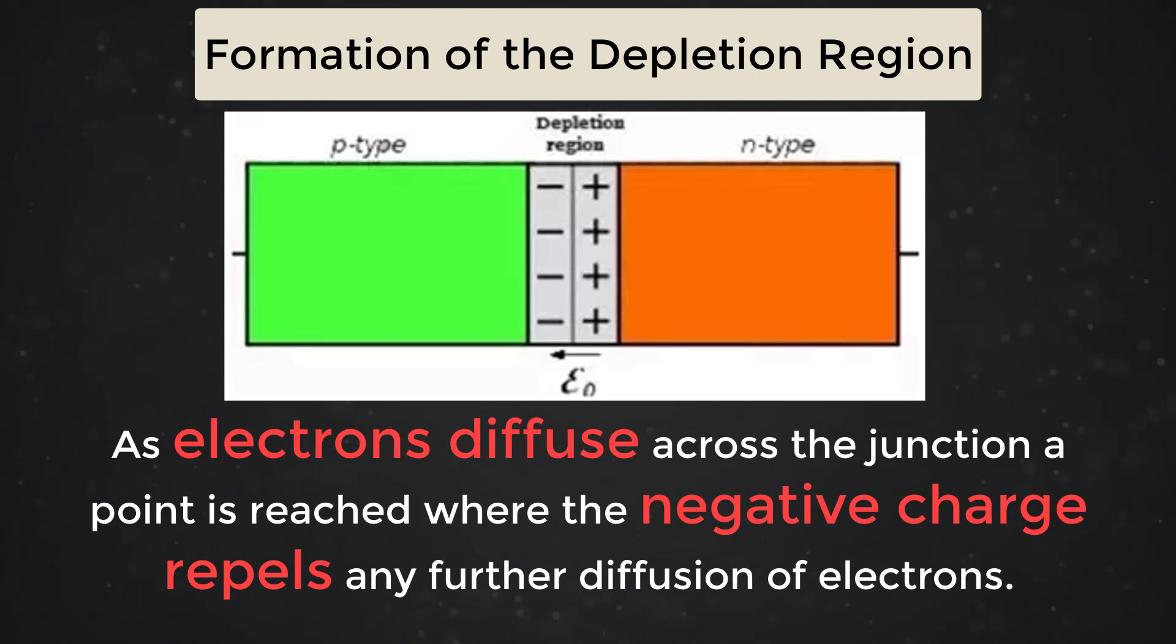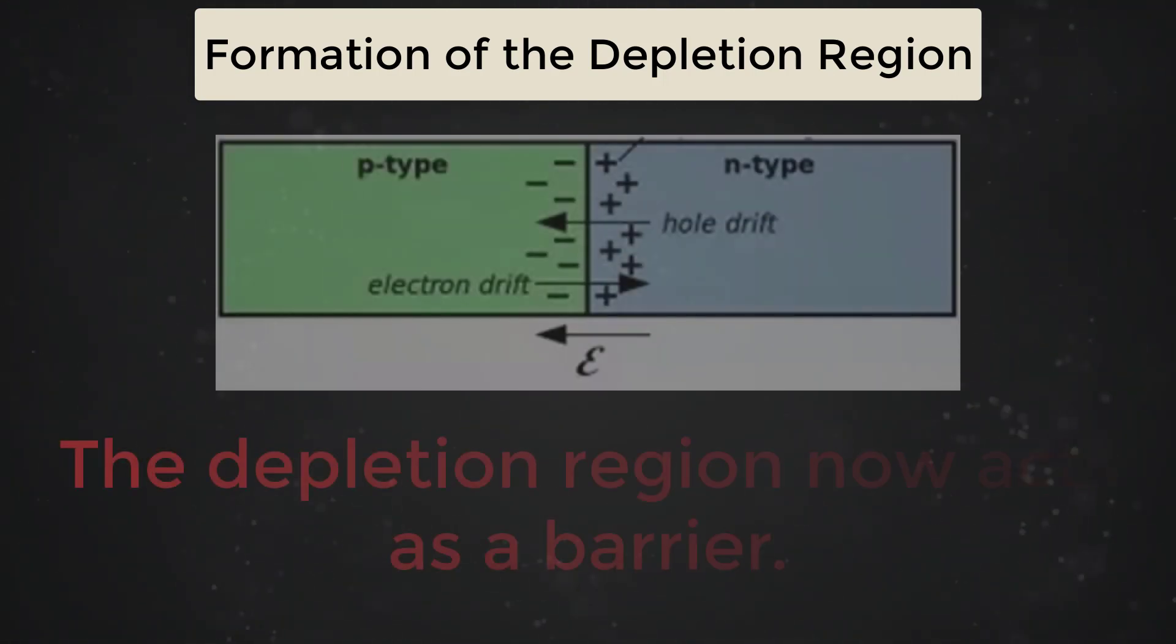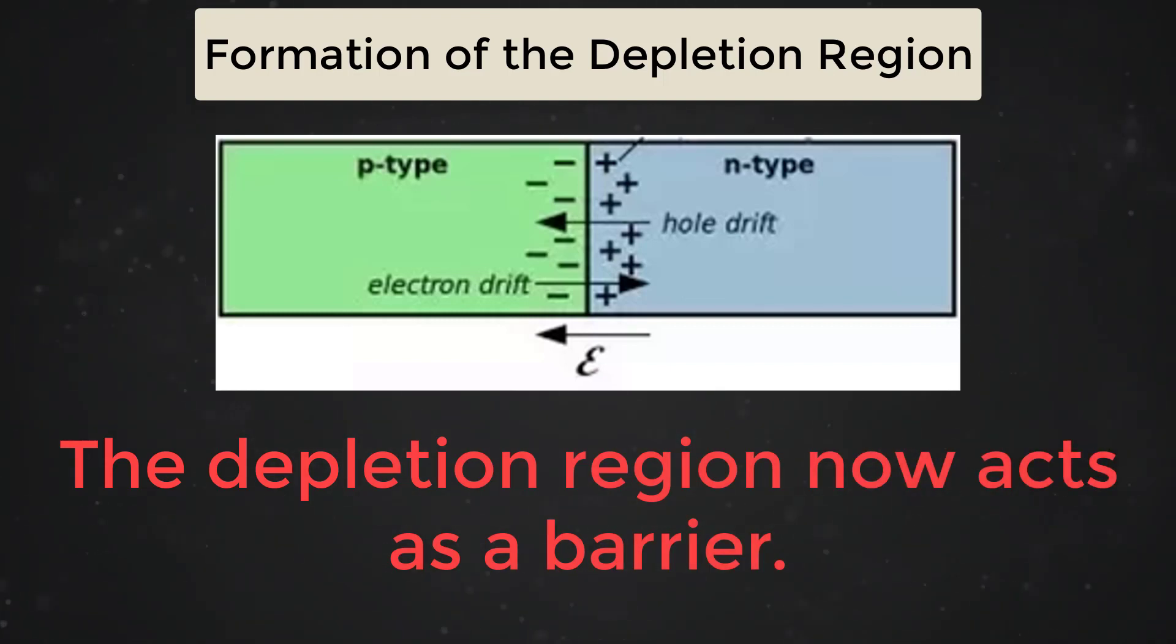As electrons diffuse across the junction, a point is reached where the negative charge repels any further diffusion of electrons. The depletion region now acts as a barrier.